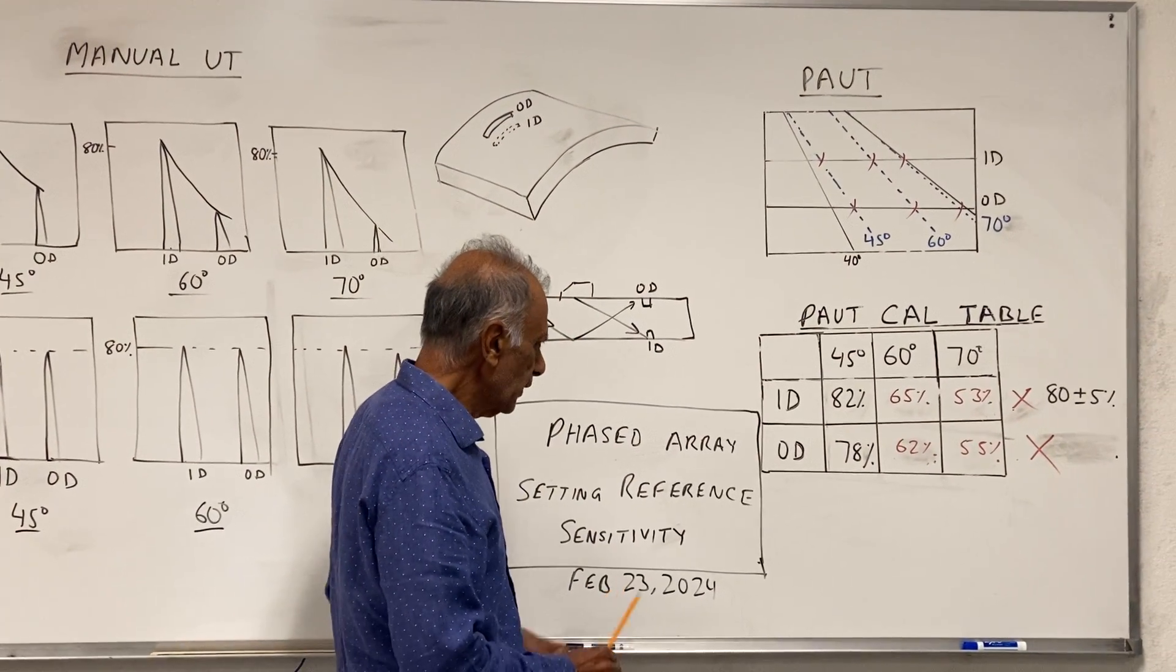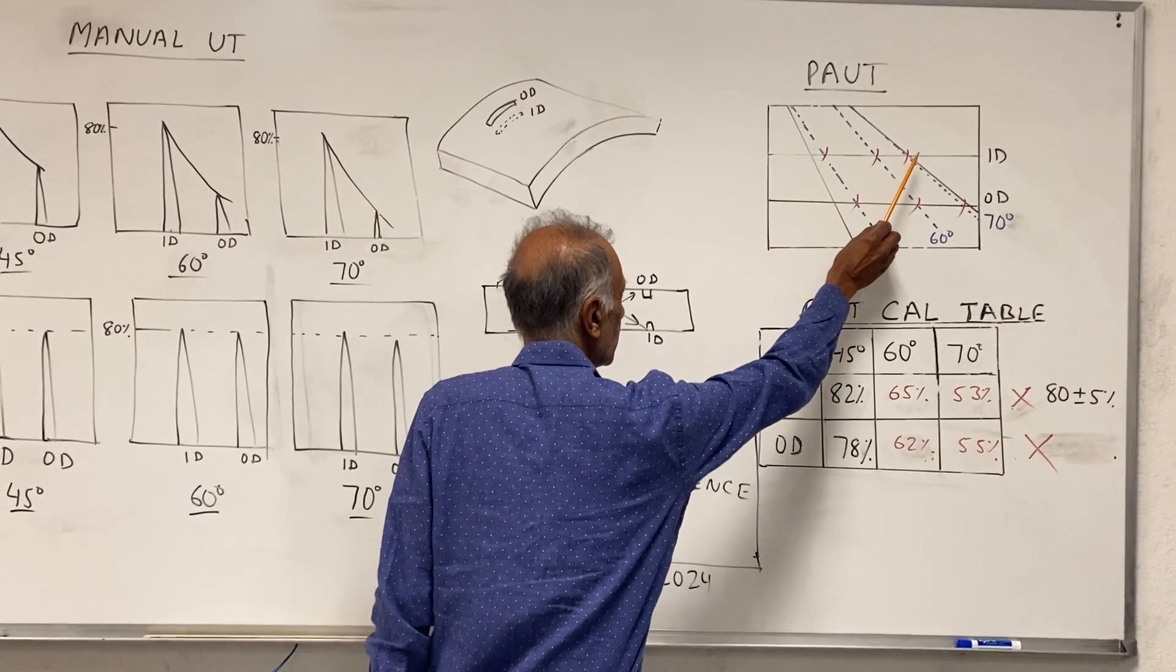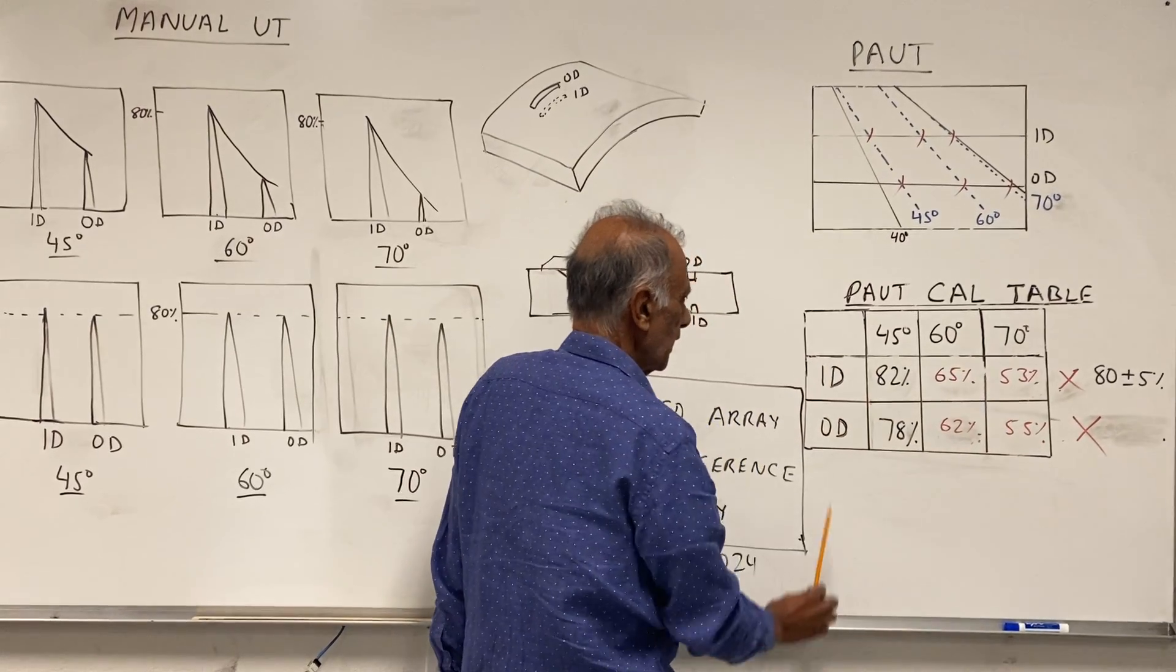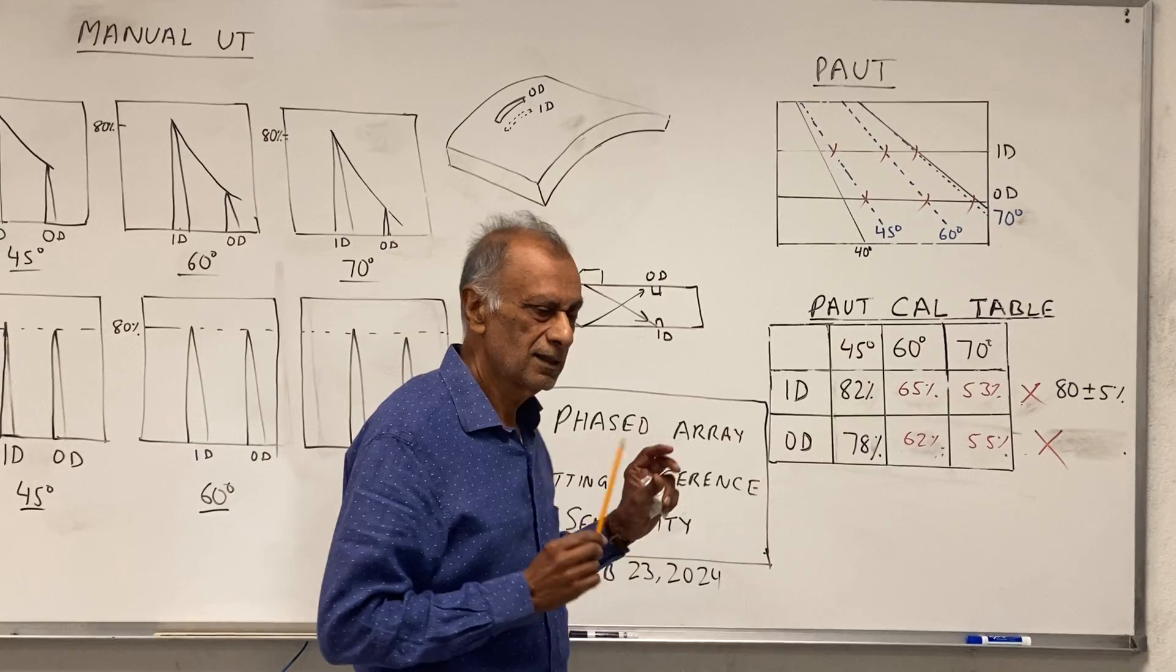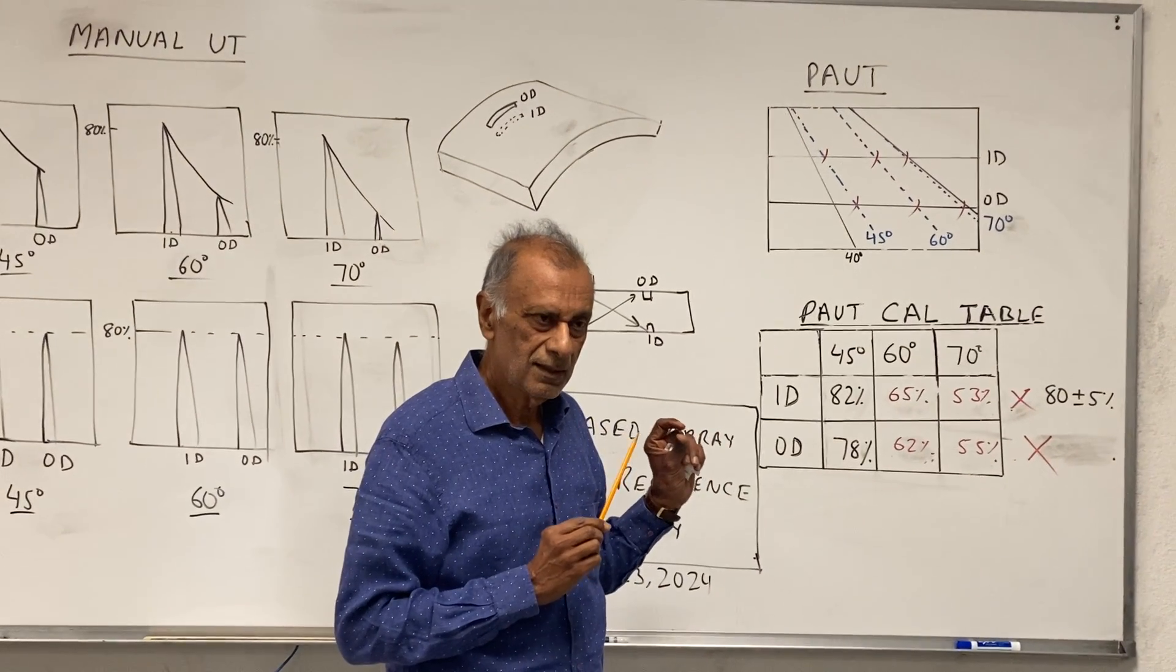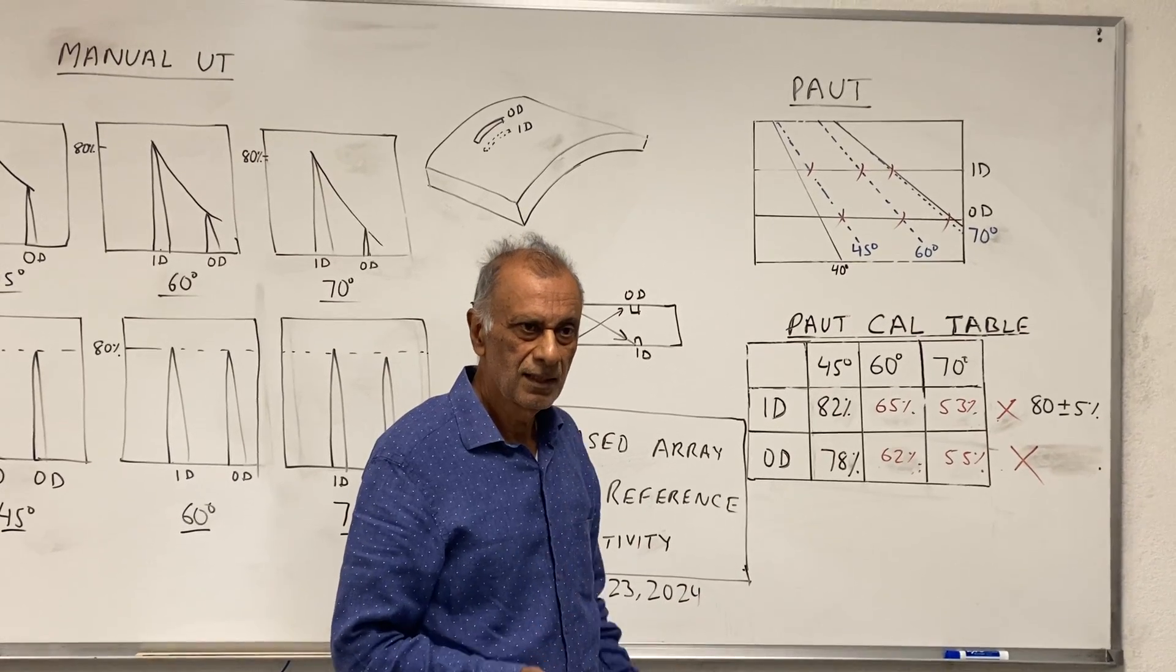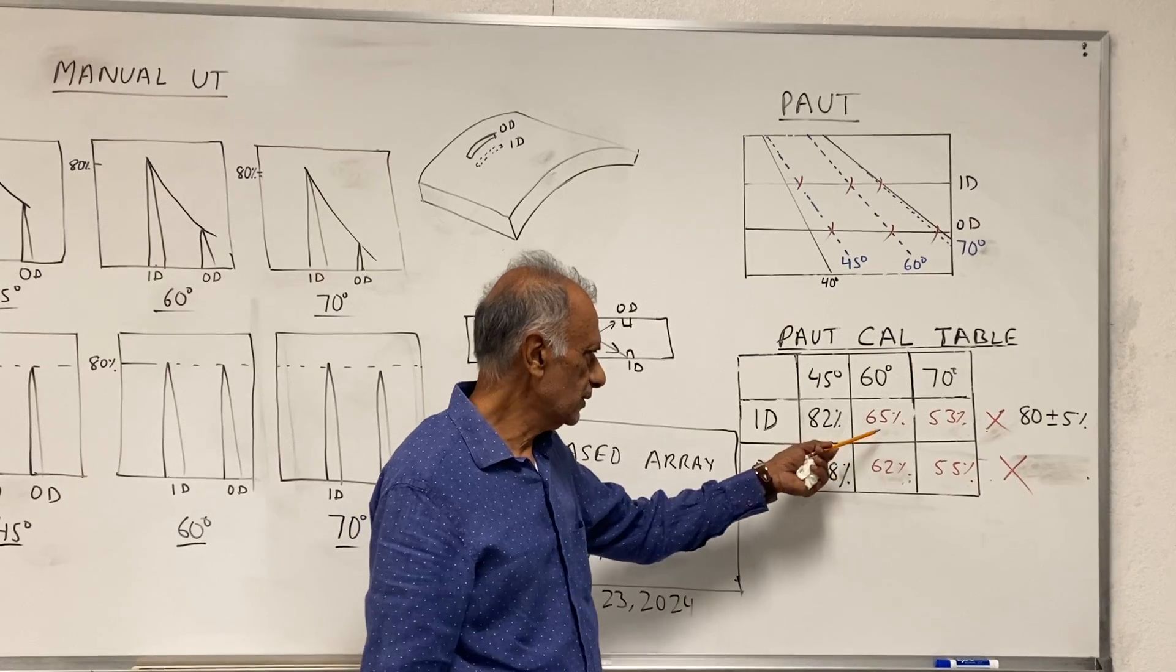When you do it, you have to take a measurement with the PAUT for all three angles for ID and for all three angles for the OD. Fill up this table and all of them should be 80%. But if you make the calibration on side drill holes and then do a one point correction for the notches, this is what you are going to get.